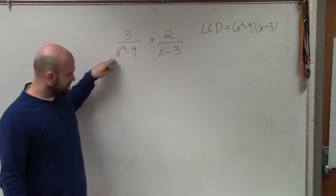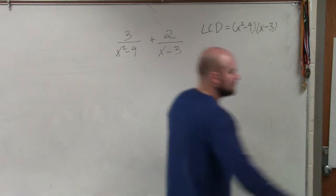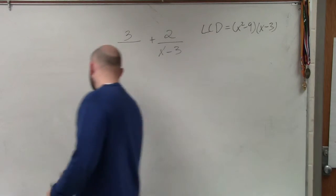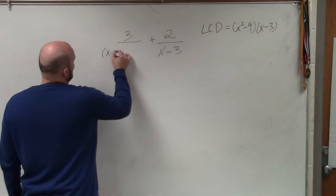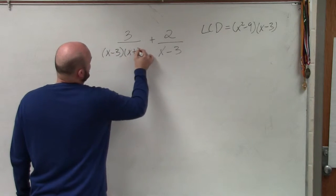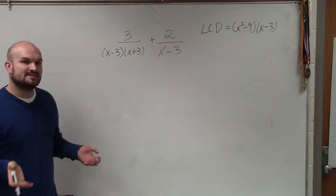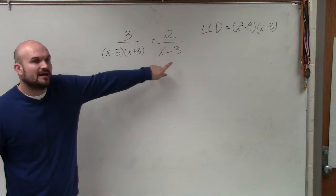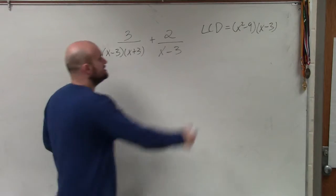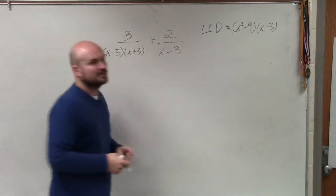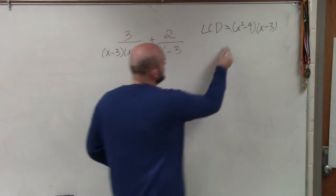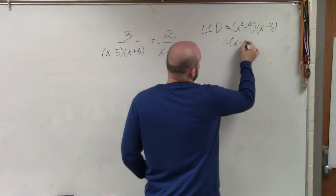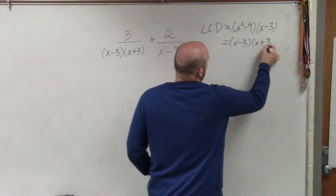Here, I can factor because this is a difference of two squares. So when I factor this, I get x minus 3 times x plus 3. So what you guys notice is they both already share an x minus 3. So the least common denominator is not x squared minus 9 times x minus 3, but it's just x minus 3 times x plus 3.